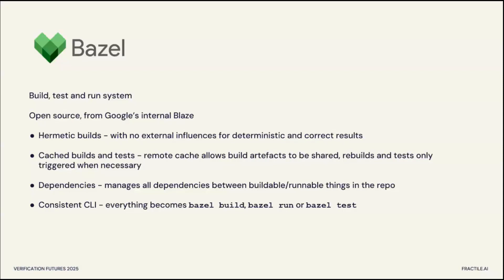The most important tool that underpins it all is Bazel. It's a build, test and run system built by Google, based on their internal Blaze project, and it gives you several main benefits. Hermetic builds: when you run a build, it is only affected by the dependencies you've declared and nothing else. It enables caching of builds and tests so that when somebody builds something, that build artifact can be cached and used by other users. It gives you dependencies in a machine-readable code format. And finally, it gives you a consistent CLI — everything in the entire repo uses the same command line interface.